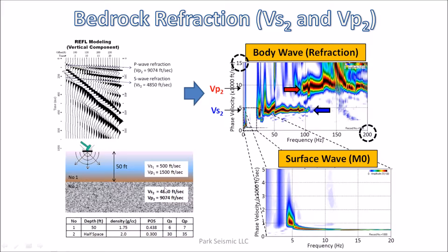How come S wave refractions could be detected from a seismic record modeled with vertical seismic source and receivers? Well, both P and S wave components are always generated regardless of the source orientation, and both components are detected by receivers of any orientation because the incoming angles of seismic waves are not perfectly vertical or perfectly horizontal.